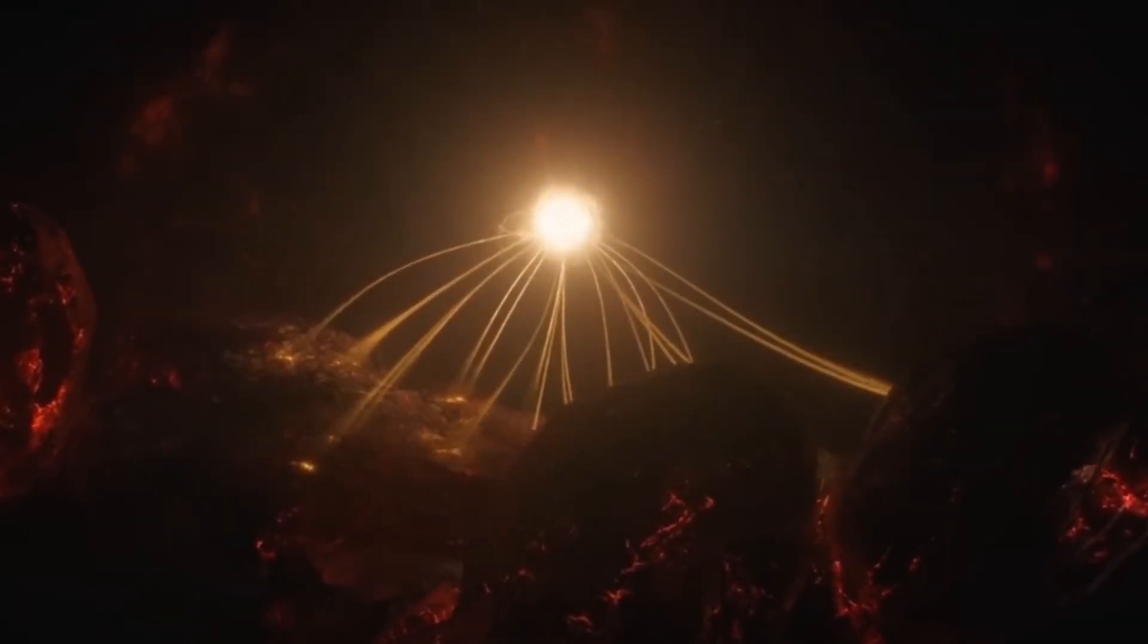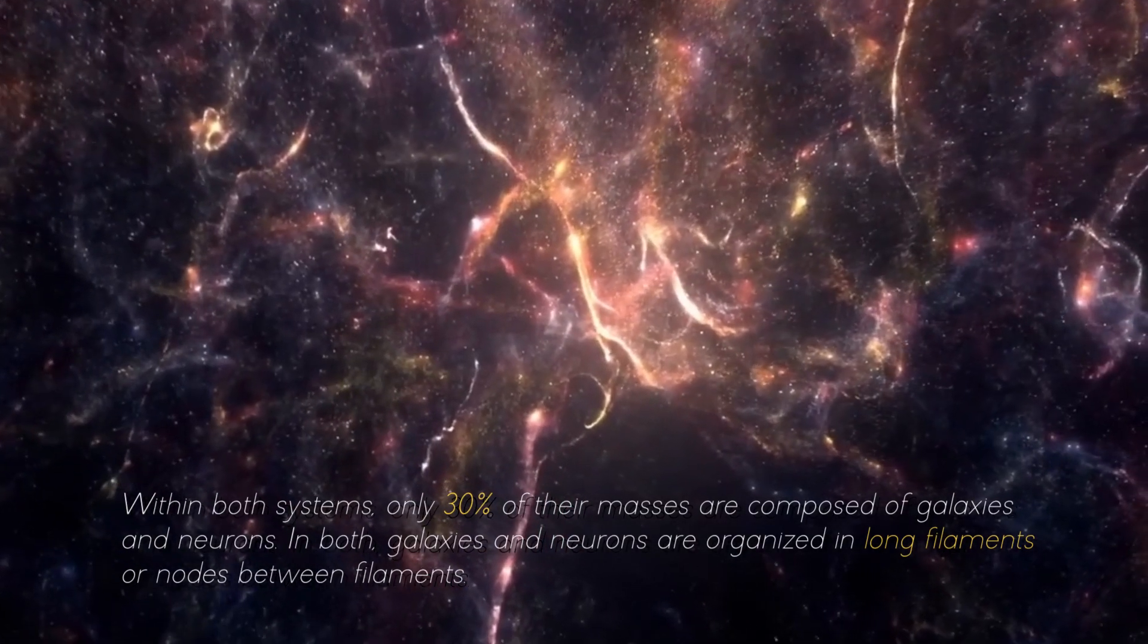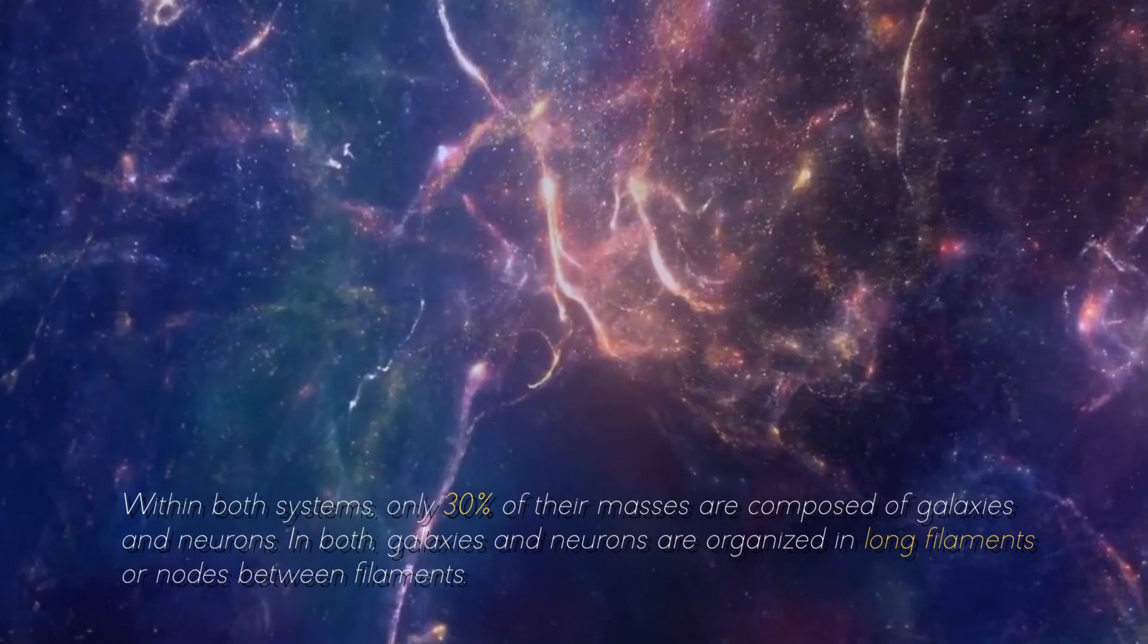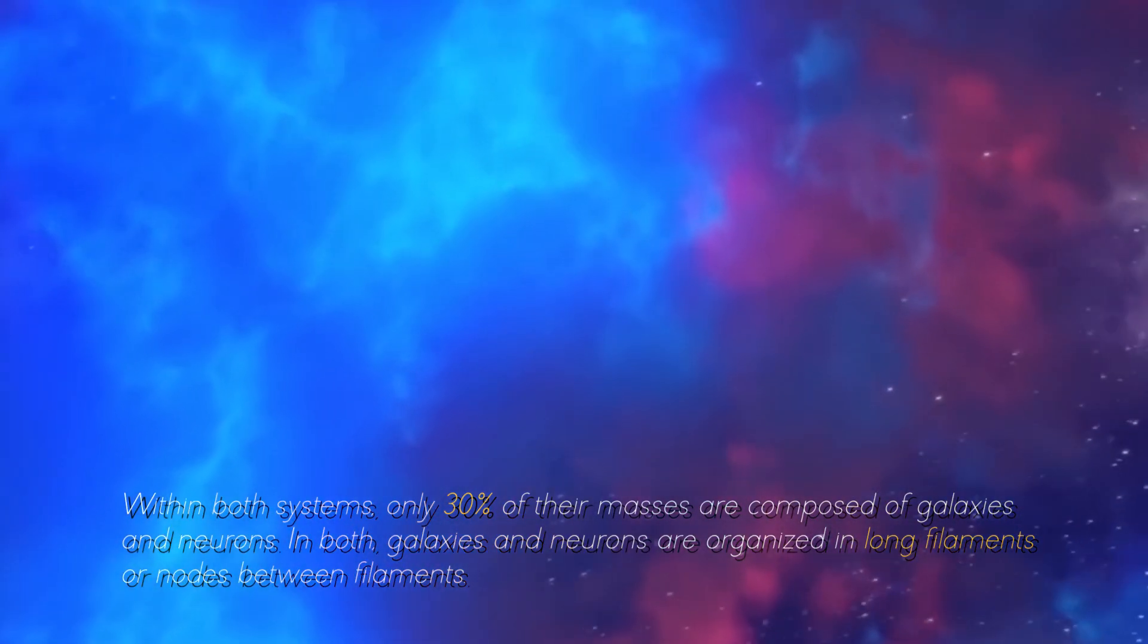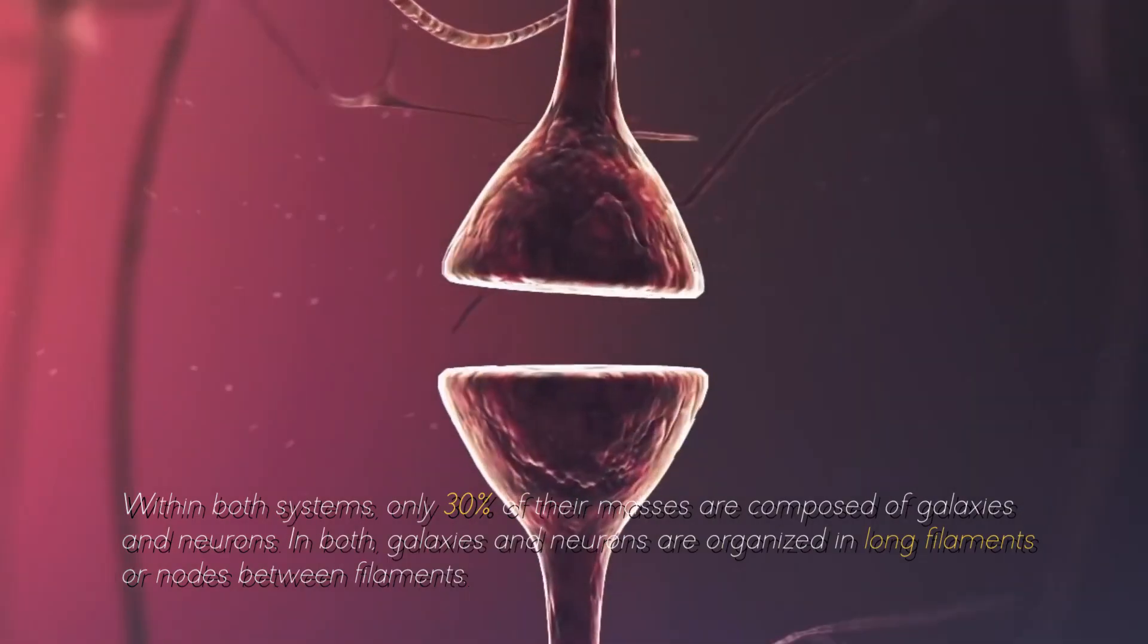Thus, it is not that our brain is like a universe, or that the universe is a brain of titanic proportions, but that their dynamics are similar. Within both systems, only 30% of the masses are composed of galaxies and neurons. In both, galaxies and neurons are organized in long filaments and nodes between filaments.